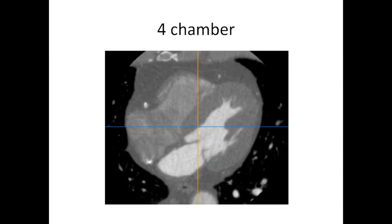First, we're going to talk about the four-chamber view. This view sees all four chambers of the heart. On CT, in many cases the basic axial view allows you to see all four chambers — right atrium, right ventricle, left atrium, and left ventricle. However, for it to be a proper four-chamber view, you do need to adjust it slightly so that you can see the full extent of all four chambers. That's the first view, the four-chamber view.